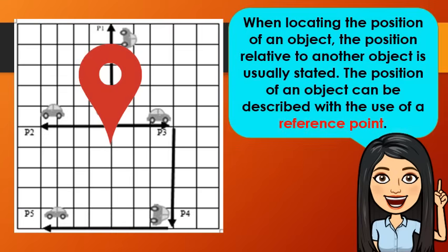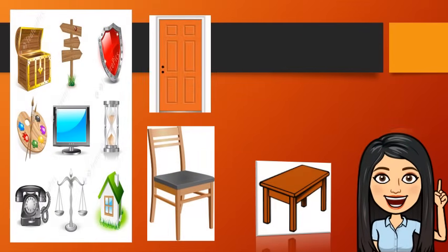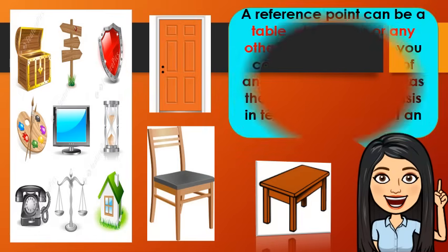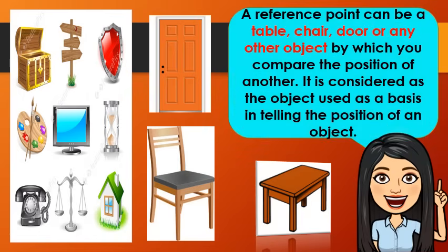Remember, when locating the position of an object, the position relative to another object is usually stated. The position of an object can be described with the use of a reference point. A reference point can be a table, chair, door, or any other object by which you compare the position of another. It is considered as the object used as a basis in telling the position of an object.